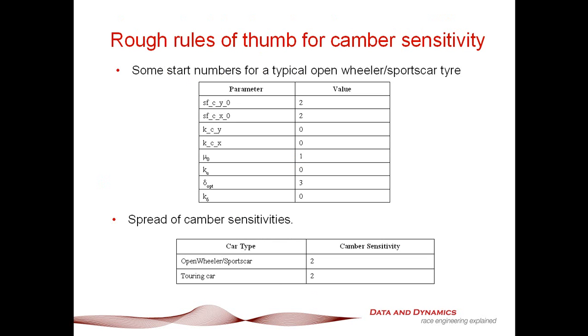Now, let's talk about some rough rules of thumb to get going. Okay, for a typical open wheeler sports car, these are some suggested parameters to start with. SFCY0 is 2, SFCX is also 2. Now, KCY and KCX, what that does is that will basically vary, not just the camber sensitivity, but that will vary the camber sensitivity as a function of load.